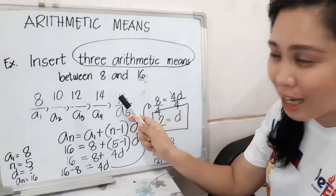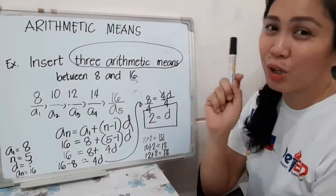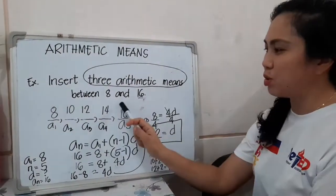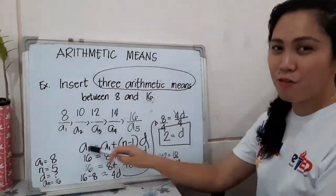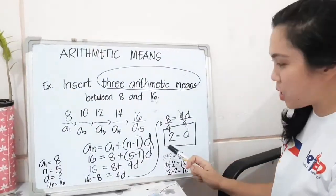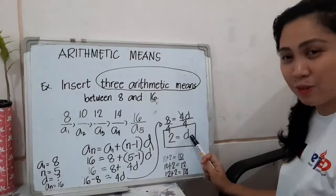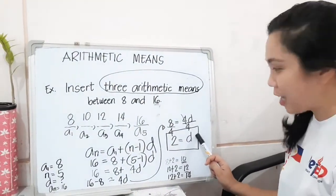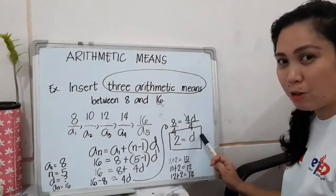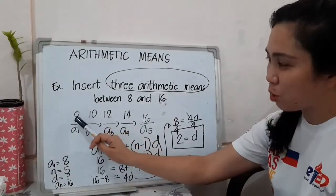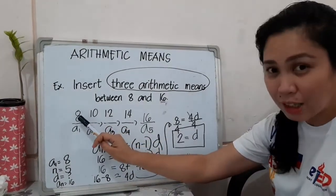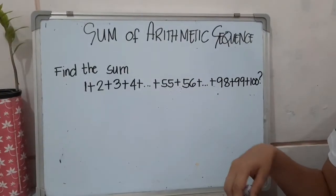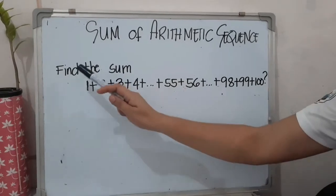We just used our formula, but in this case we had to solve for the common difference first, and once we had it, we added it to our first term to find each mean. Now, if your teacher asks you to find the sum of 1 plus 2 plus 3 plus 4 plus dot dot dot plus 55 plus 56 plus dot dot dot plus 98 plus 99 plus 100, how would you answer that?